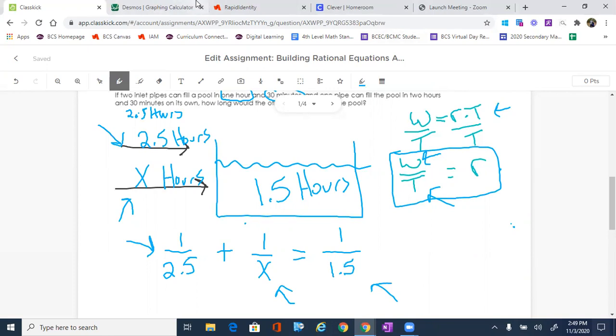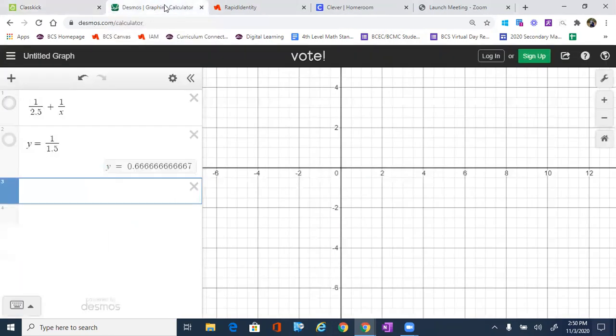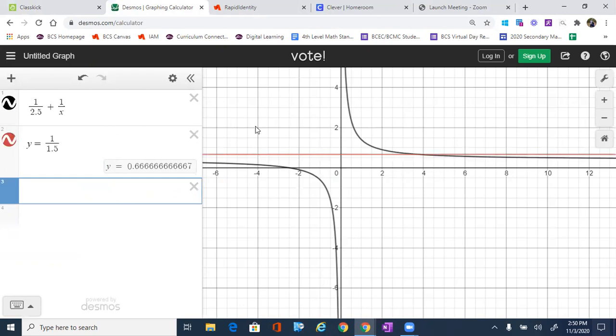Okay, when we do this, all we got to do now is go over to Desmos and start plugging things in. So that's where I've got 1 over 2.5 plus 1 over X. And then I'm going to plug in Y equals 1.5 because that's what they are combined. So I just turn them on. And what I'm going to do is look for where they intersect. And as we find out where they intersect, it is 3.75.